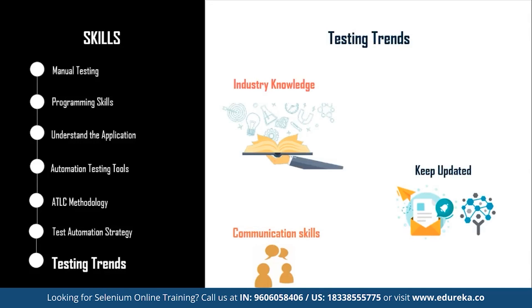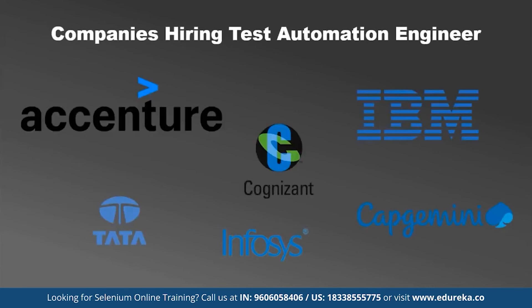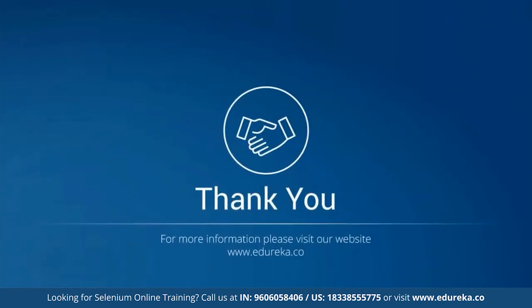Once you have mastered these skills, you are on your way to becoming a successful software test automation engineer. Some of the top companies hiring for test automation engineers are Accenture, IBM, Cognizant, Infosys, TCS and Capgemini. Keep an eye out for opportunities and utilize your skills to grab the offer. That was all about today's session — I hope this helps you prepare and get well versed with all the skills to become a successful test automation engineer. If you have any queries, put them in the chat section and we will get back to you. Thank you and happy learning.